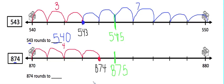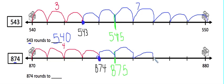Next, let's figure out how far away 874 is from 880. Again, we start at 874 because that's the number we're rounding, and we're going to jump forward to 880. So count the jumps with me: one — puts us at the midpoint — two, three, four, five, six. So 874 is six numbers away from 880.